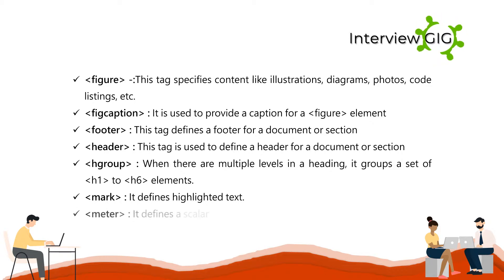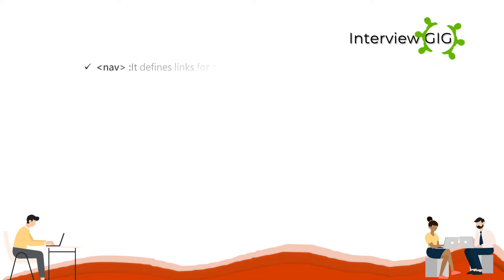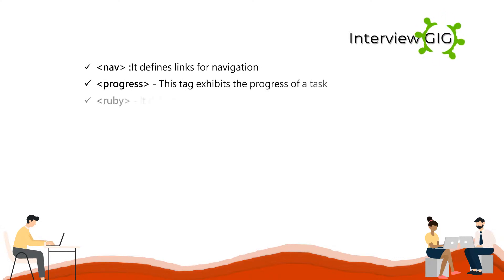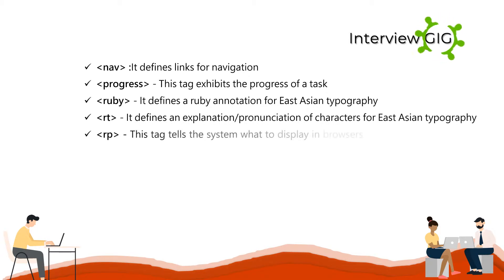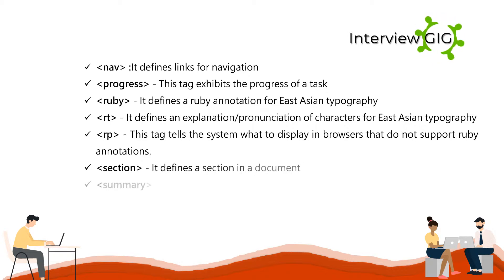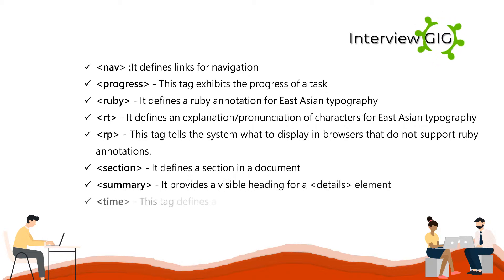Additional structural tags: Meter, which defines a scalar measurement within a known range; Nav, which defines links for navigation; Progress, which exhibits the progress of a task; Ruby, which defines a Ruby annotation for East Asian typography; RT, which defines an explanation or pronunciation of characters for East Asian typography; RP, which tells the system what to display in browsers that do not support Ruby annotations; Section, which defines a section in a document; Summary, which provides a visible heading for a details element; Time, which defines a date or time; and WBR, which defines a line break.